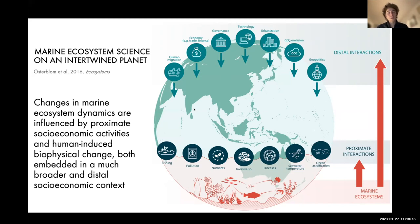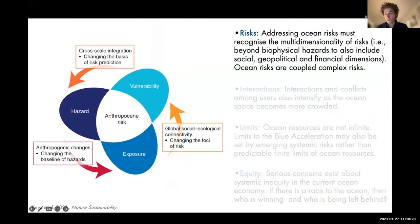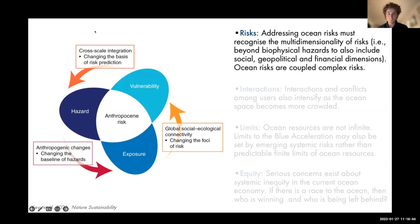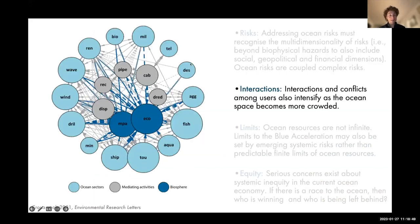Addressing ocean risk must recognize its multi-dimensionality: not just biophysical hazards but also social, geopolitical, and financial dimensions. Ocean risk typically operates as coupled, complex risk acting in non-linear ways. As there are more and more users of the ocean, interactions between users and potential conflicts will intensify as ocean space becomes more crowded.